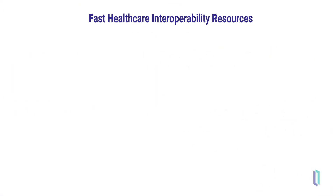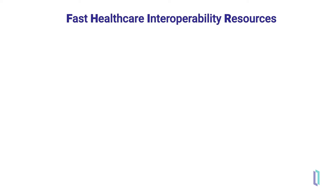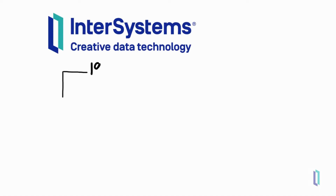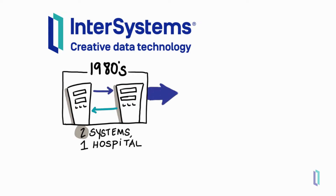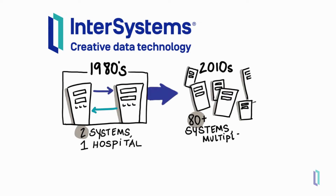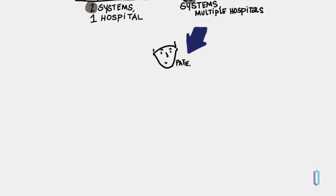FHIR, or Fast Healthcare Interoperability Resources, is a healthcare data standard created by HL7 International to meet the interoperability needs of the current healthcare data environment. Over the past few decades, more and more systems need to be connected, so a data standard of this kind has become essential. In fact, compatibility with the FHIR standard is now federally mandated for healthcare IT systems in many countries.